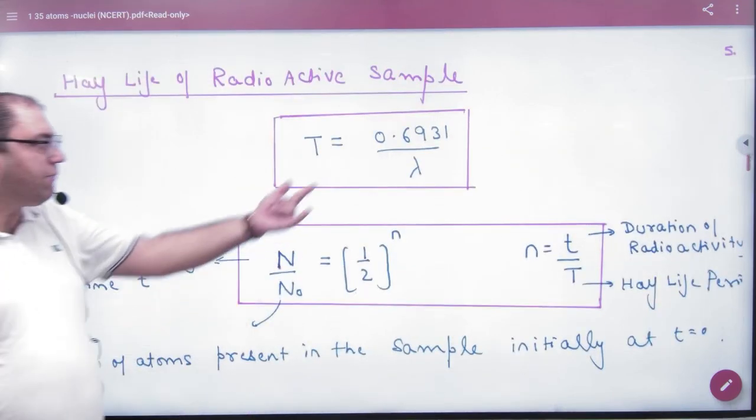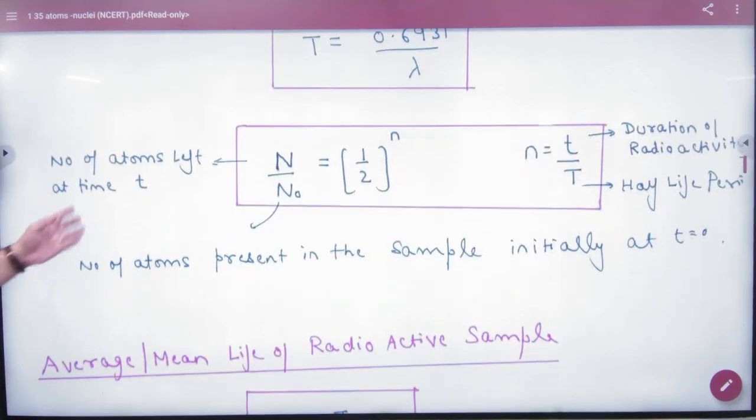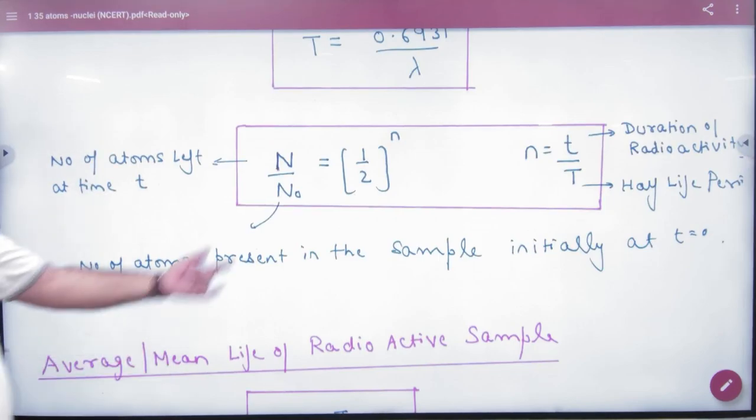Half-life period is 0.6931 by lambda. The number of atoms left at any instant formula we have not done.